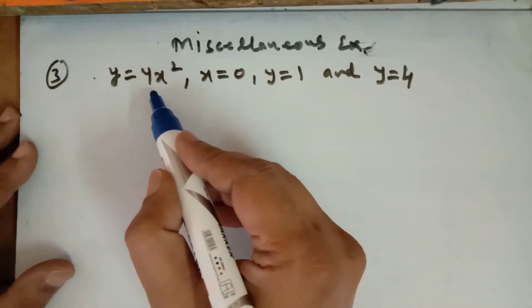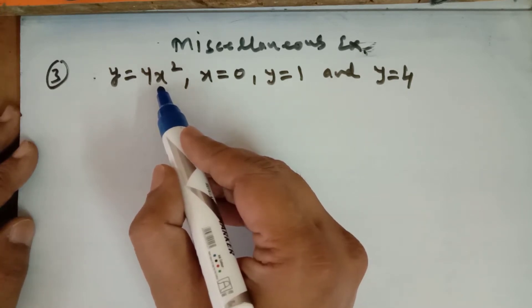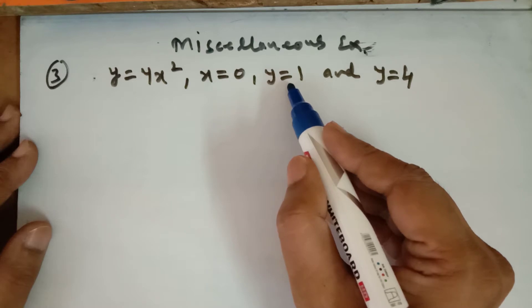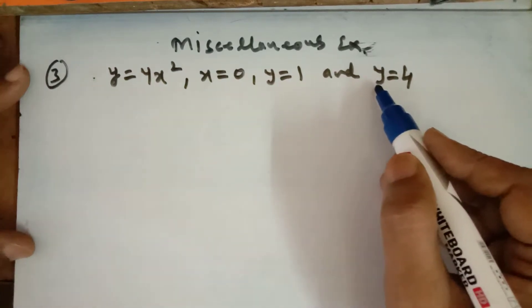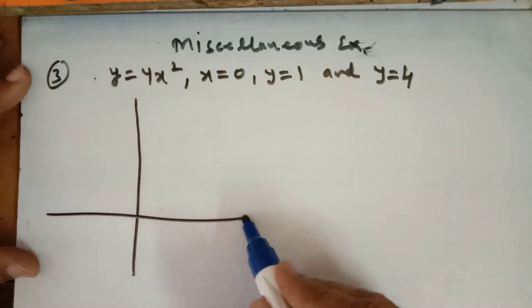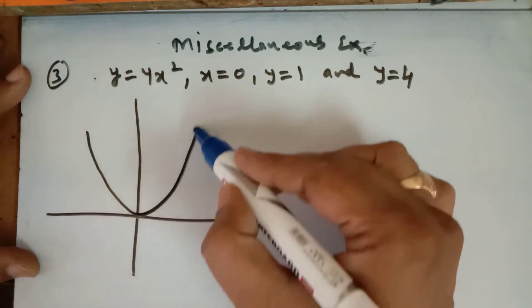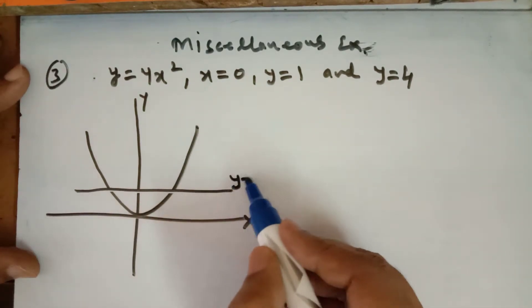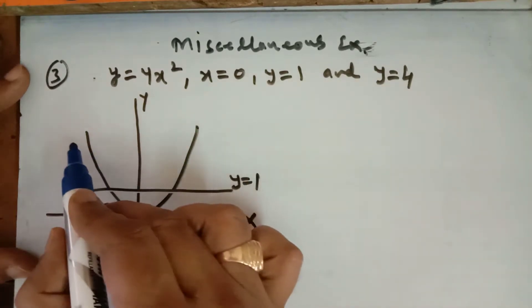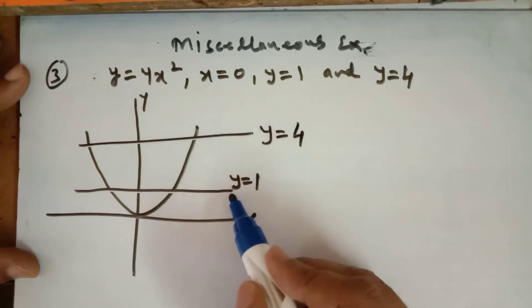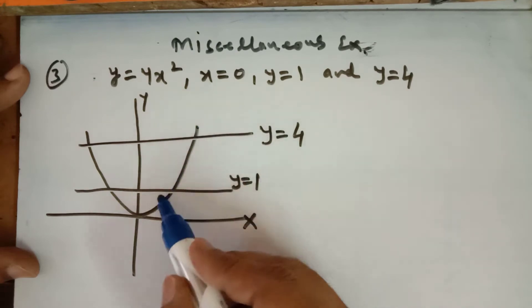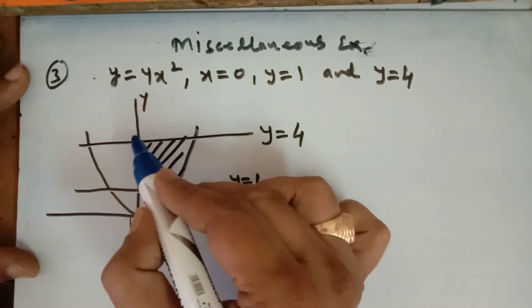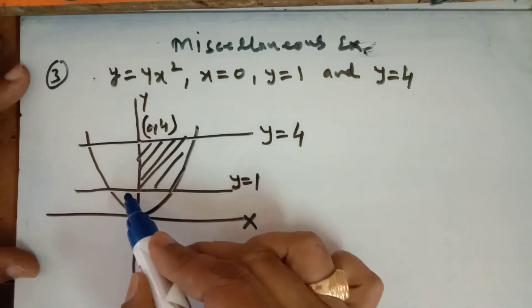This curve is a parabola symmetrical to the y-axis. x equal to 0 means the y-axis, y equal to 1 is a line parallel to the x-axis, and y equal to 4 is also a line parallel to the x-axis. The parabola passes through the origin. The coordinates of the boundary points are (0, 4) and (0, 1), and we have to find the enclosed area in the first quadrant.